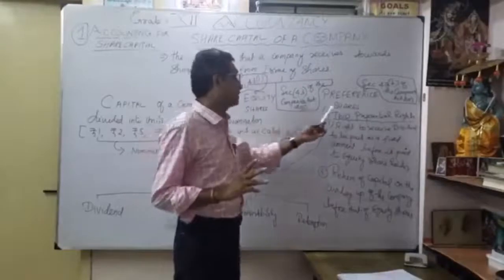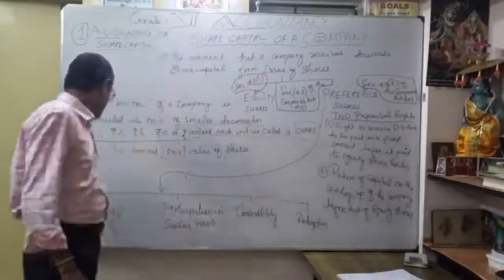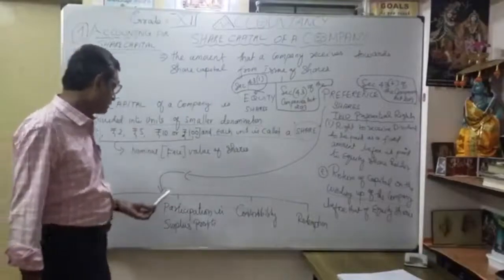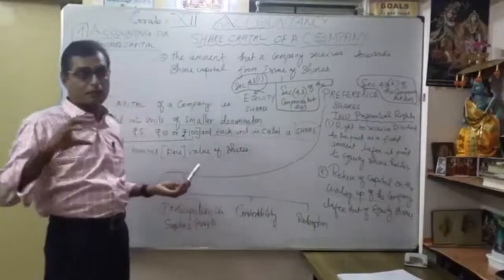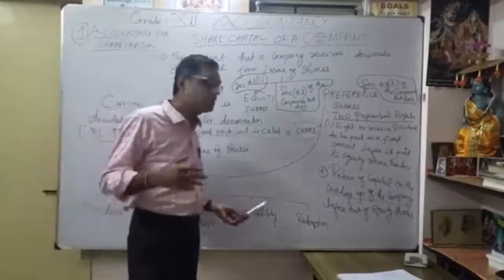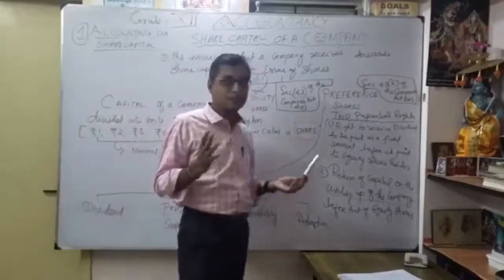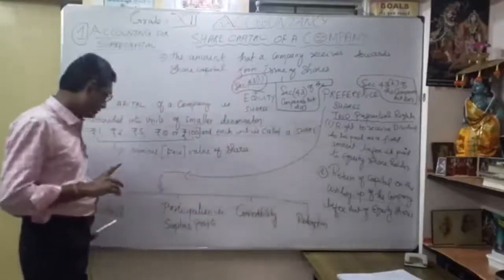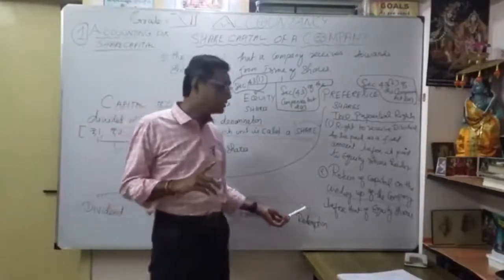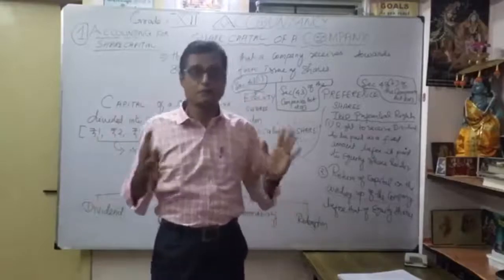Preference shares can be classified under four headings. First, according to dividend point of view. Second, participation in surplus profits. Third, convertibility. Fourth, redemption. Under these four headings, we will classify the different types of preference shares one by one.